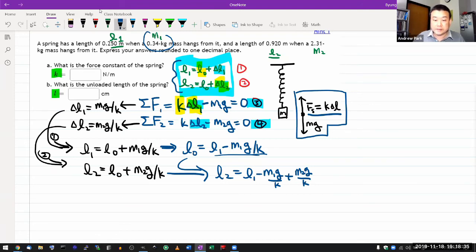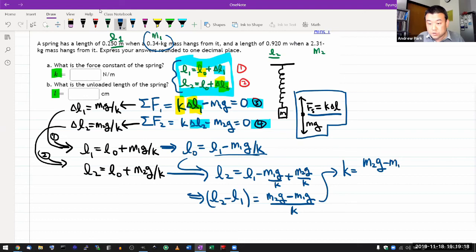Let's collect the like terms, trying to minimize algebra here. Let me move L1 over and collect the like terms. Then I get L2 minus L1 equals M2 G minus M1 G over K. Thankfully, the denominators are the same. It's a matter of just moving things over. Move K to the left-hand side, move left-hand side over to the right-hand side. Then you end up with K equals M2 G minus M1 G over L2 minus L1.